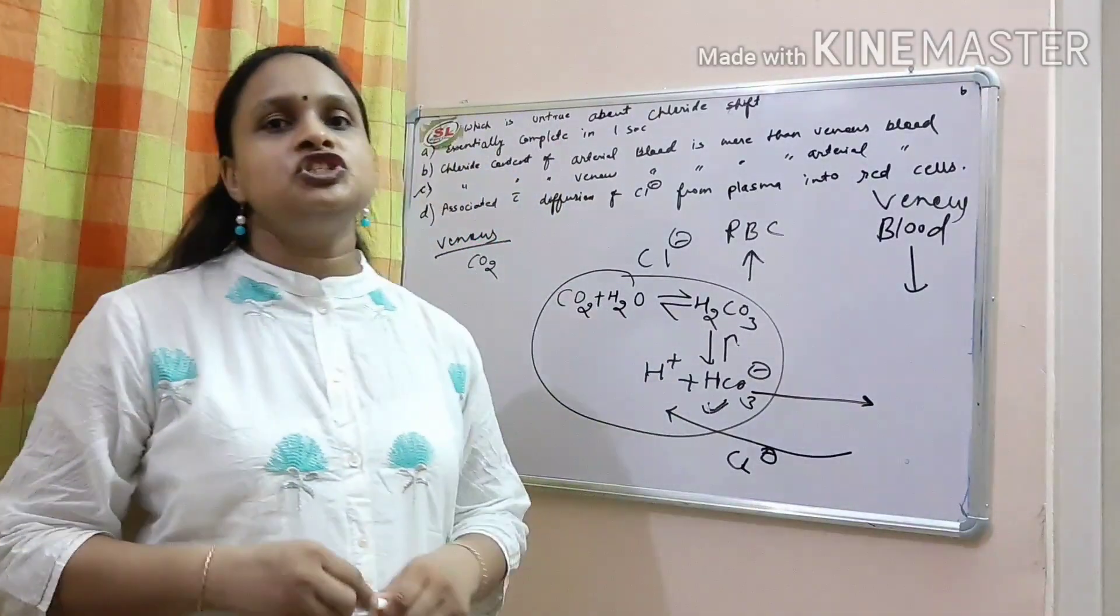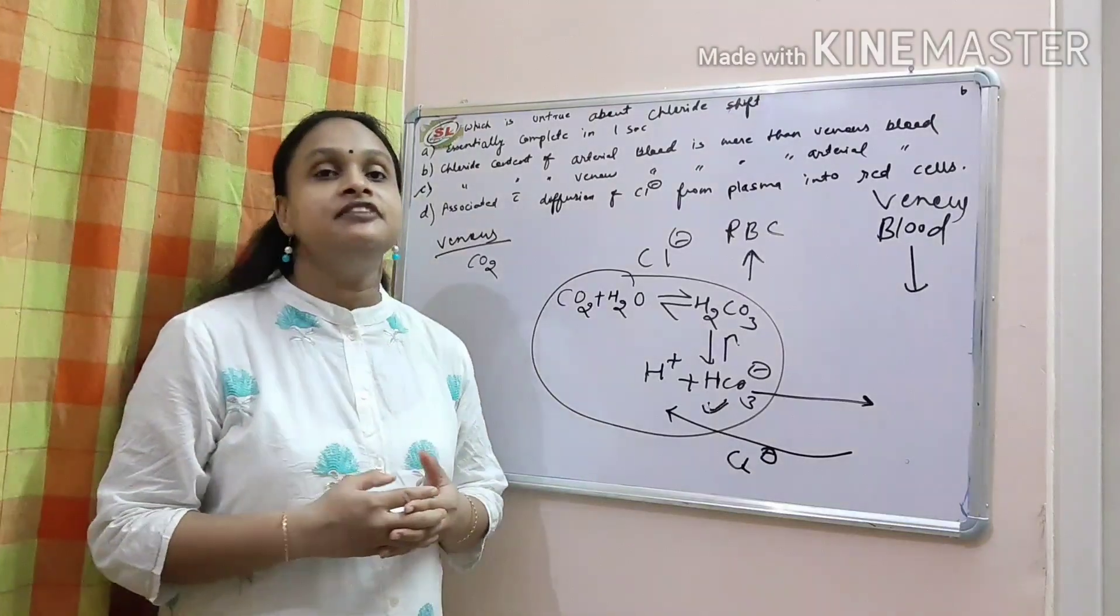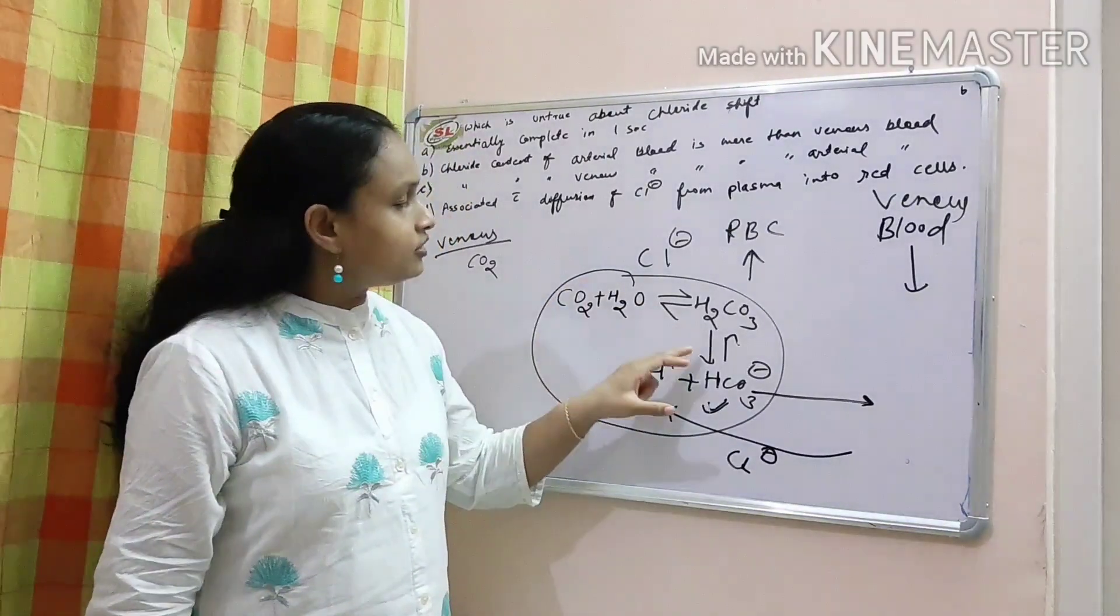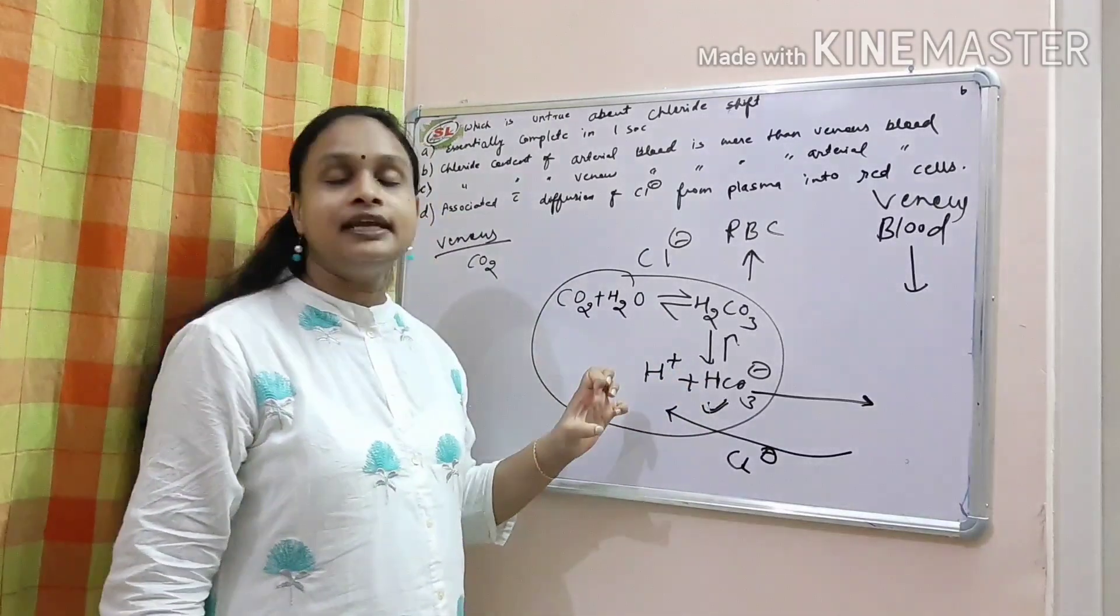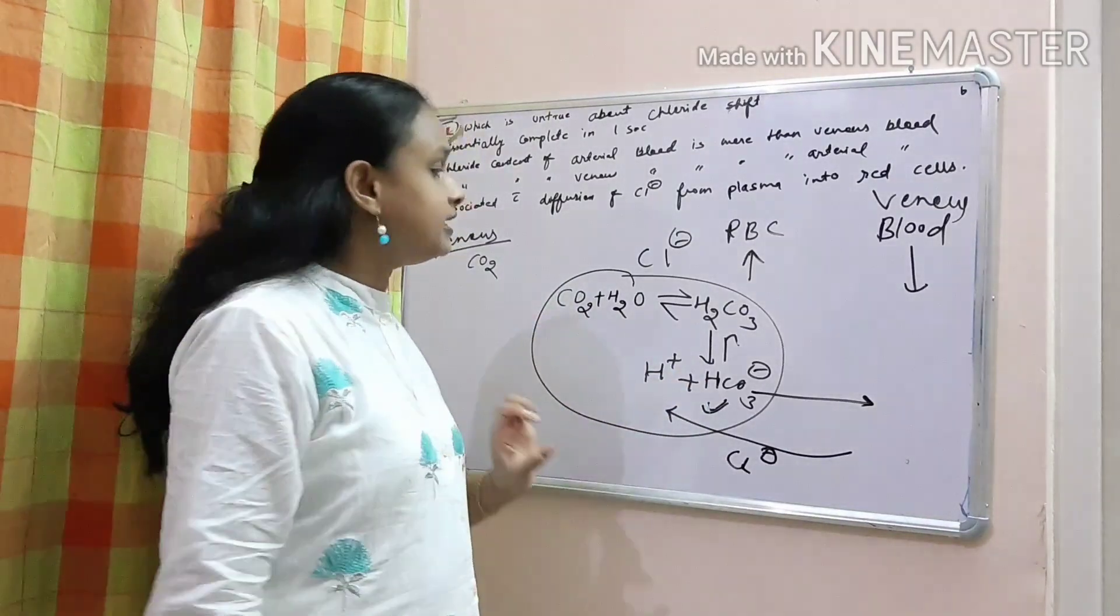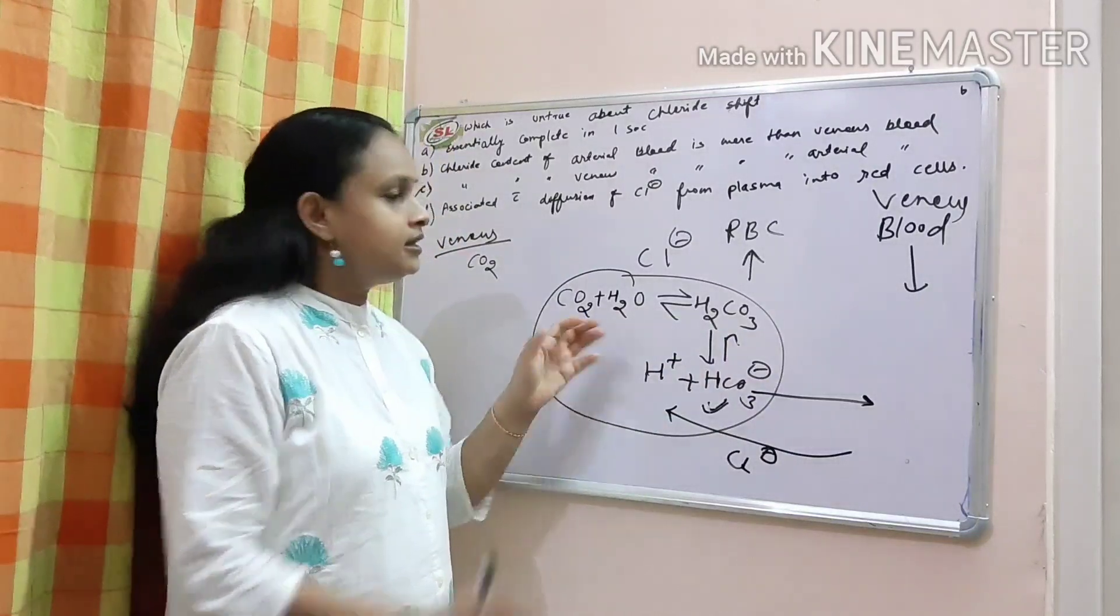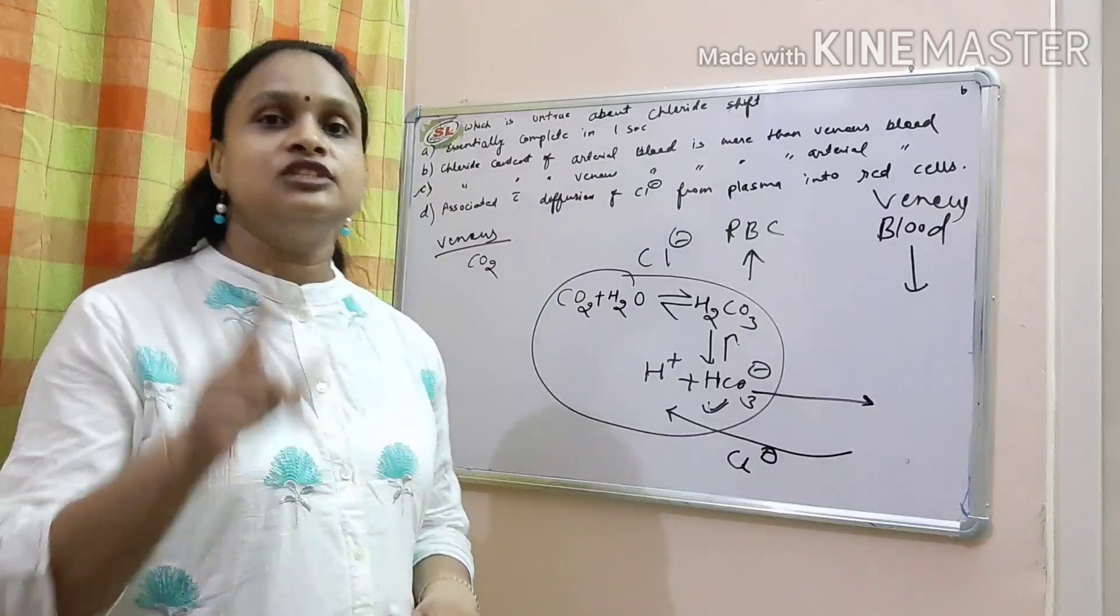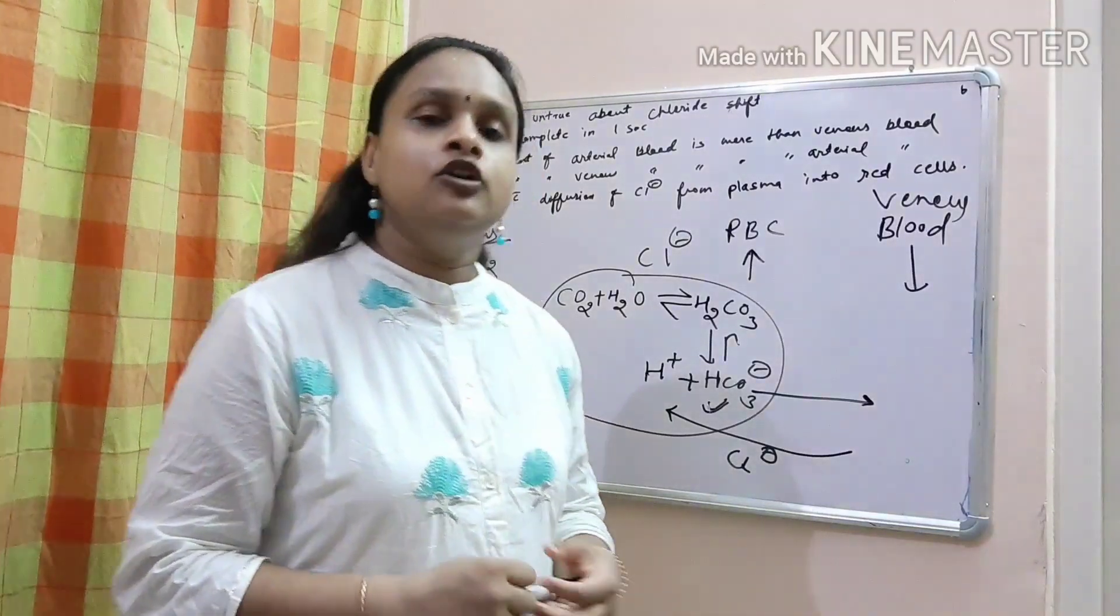Another question: why more hematocrit is there in venous blood? Because more electronegativity is there, more osmotically active ions are there. So they imbibe water. The RBC is swollen up and there is more hematocrit in the venous blood. This is what will happen and why.